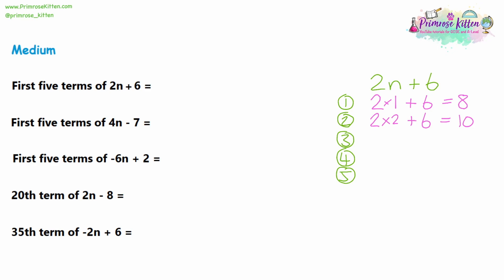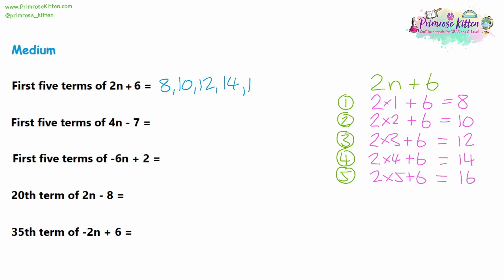We're remembering the algebra rules: a number and a letter next to each other is a multiplication — we don't write the multiplication sign in algebra. So we're multiplying 2 by all the numbers from 1 to 5: 2 times 3 plus 6, 2 times 4 plus 6, and 2 times 5 plus 6. The answers give us all the terms: 2 times 3 is 6 plus 6 is 12; 2 times 4 is 8 plus 6 is 14. The sequence 8, 10, 12, 14 is going up by 2 each time, so the last term must be 16. These are the first 5 terms.